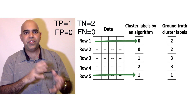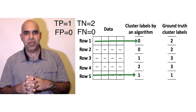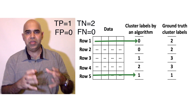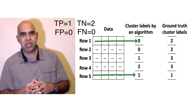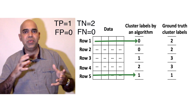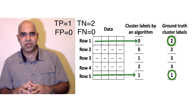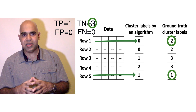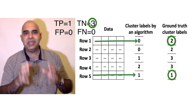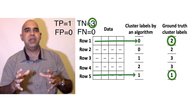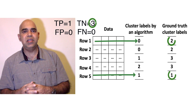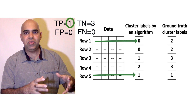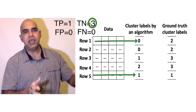Now, the first row and the fifth row. They are from two different algorithmic clusters and hence negative. They are also from two different ground truth clusters, giving us another true negative — three true negative pairs so far. In total, we have seen one true positive and three true negatives.